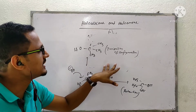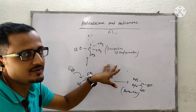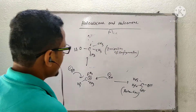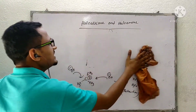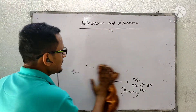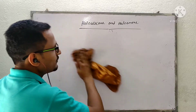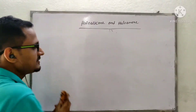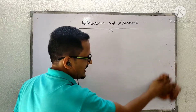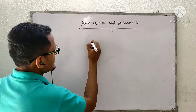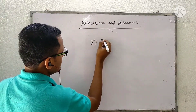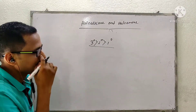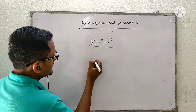This is the actual mechanism of SN1 reaction. Since the formation of the carbocation is the rate-determining step, any haloalkane which produces a more stable carbocation will participate first in SN1 reaction. The order of SN1 reaction is: 3° > 2° > 1°, as I told you in the last class.